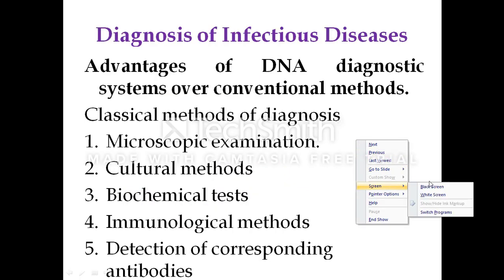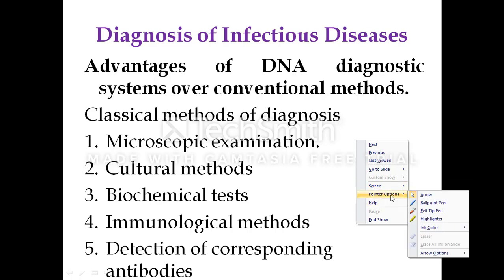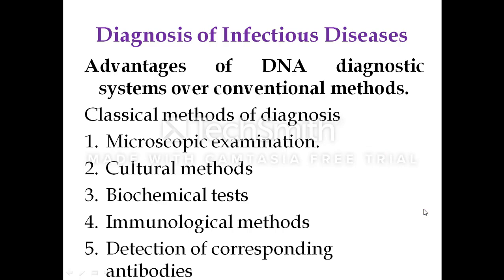These probes are advantageous over the conventional methods of diagnosis. Although diagnosis of infectious diseases starts with observations of symptoms and organs involved, it is essential to confirm or identify the infectious agent. The classical methods of diagnosis include microscopic examination of the specimen, cultural methods, testing of susceptibility to potential therapeutic agents, biochemical tests for identification of the pathogen, immunological methods to ascertain the identity of the isolate, and detection of corresponding antibodies in infected individuals.